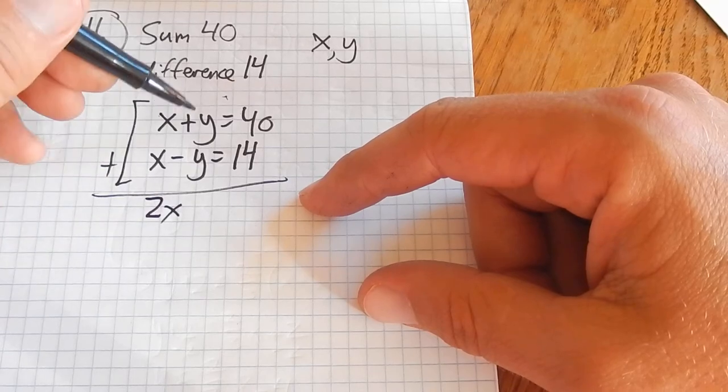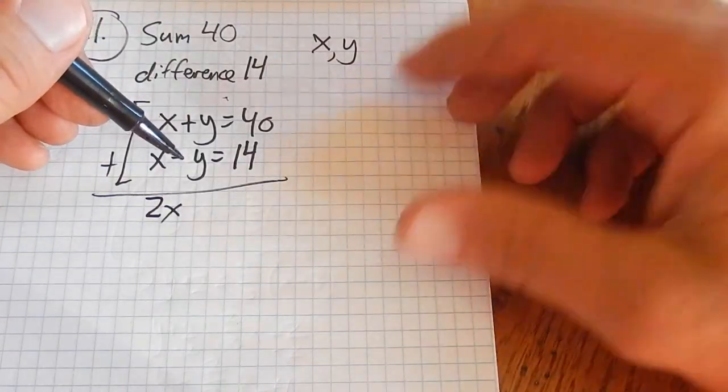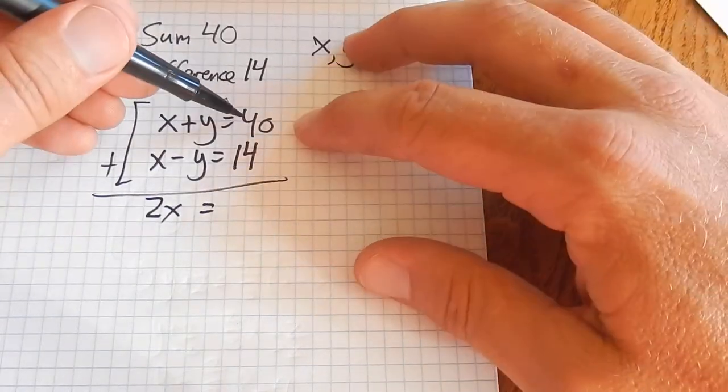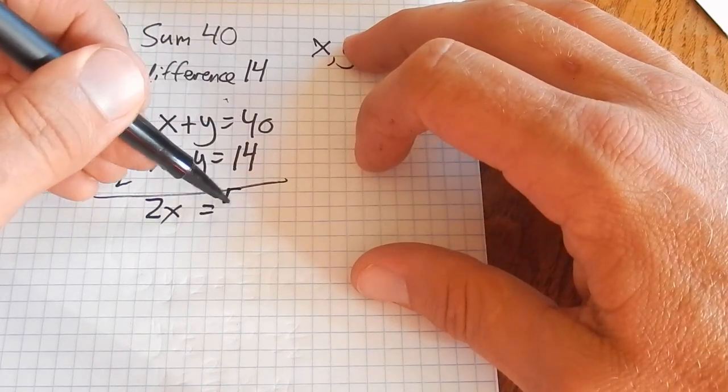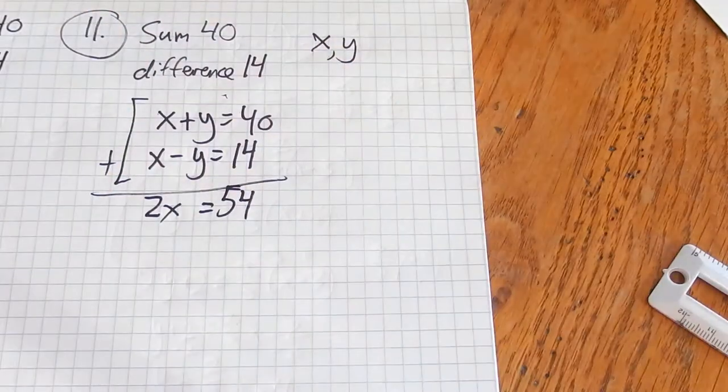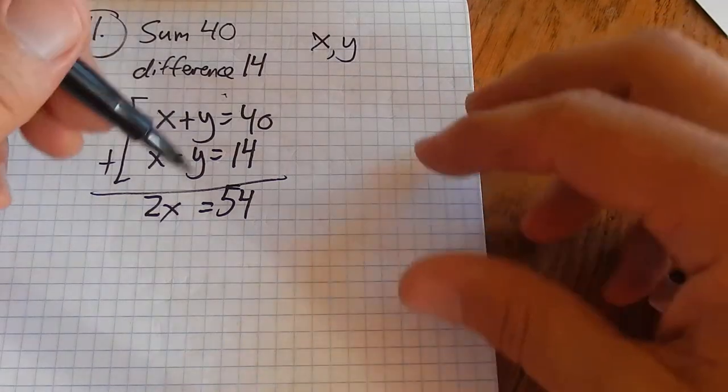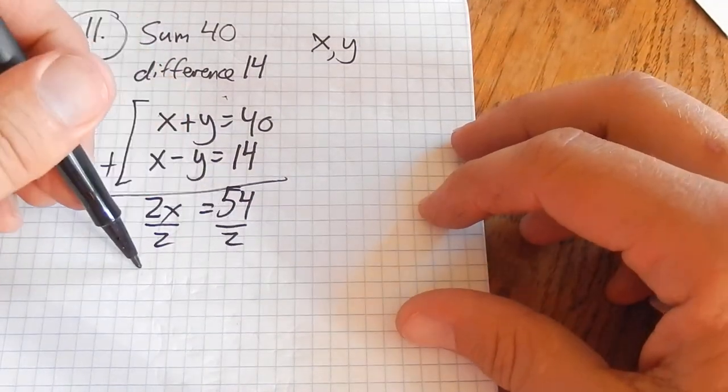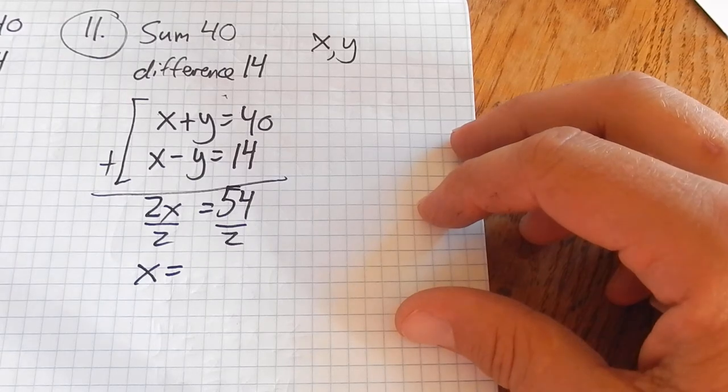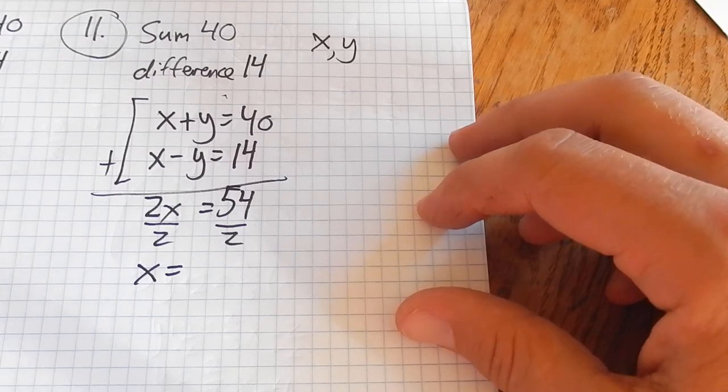x plus x is 2x. y minus y, that's zero. That's what I wanted to happen. 40 plus 14 is 54. So now I have 2x equals 54. Divide both sides by 2, and x is equal to 27.